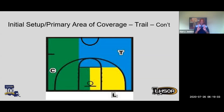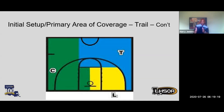Trail is also responsible for marking all threes in that blue area. We only need one marker — two markers means two sets of eyes on one player. Don't follow the bouncing ball. One marker, and trail has the mark in his or her blue area. Trail is also responsible for closely guarded in that blue area.